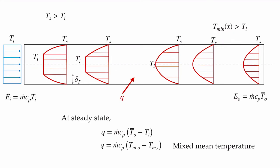Now let's consider the energy transfer in our pipe. This convective flow coming into our pipe is carrying energy in convectively, and that energy is given by the mass flow rate times Cp times the temperature at the inlet Ti — a constant value — so this is simply m-dot times Cp times Ti. At the outlet where the flow is coming out, we now have a temperature distribution, and so we need to use the proper average at the outlet in order to calculate the energy going out. The energy going out is m-dot times the specific heat times that proper average temperature.